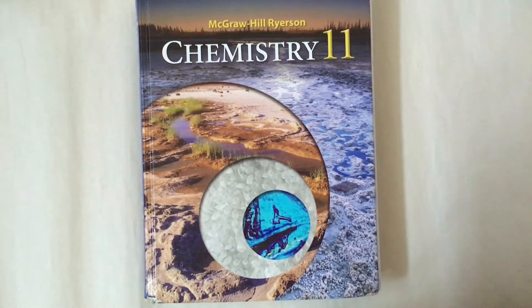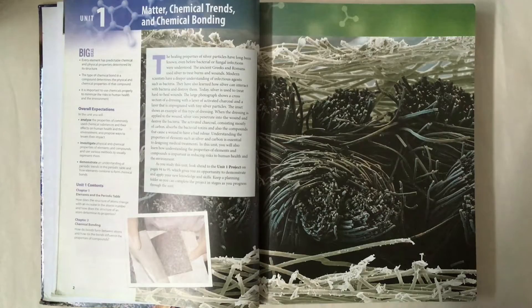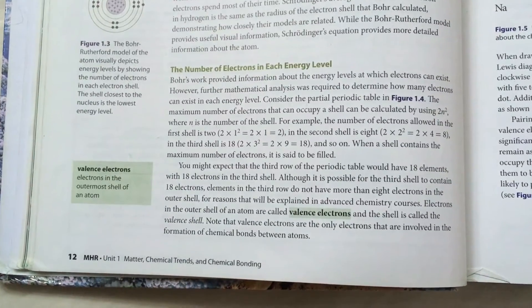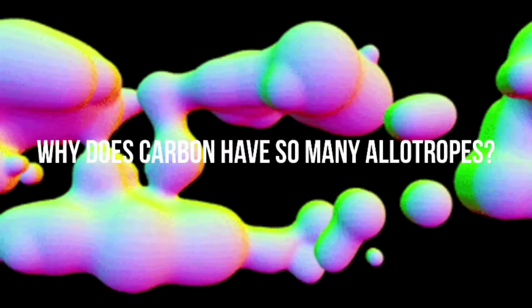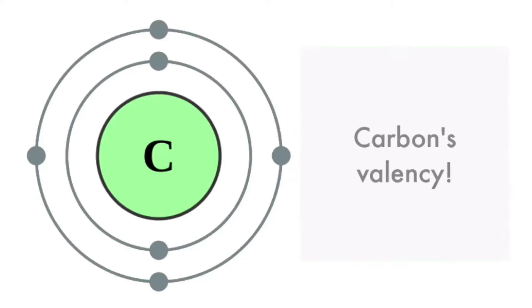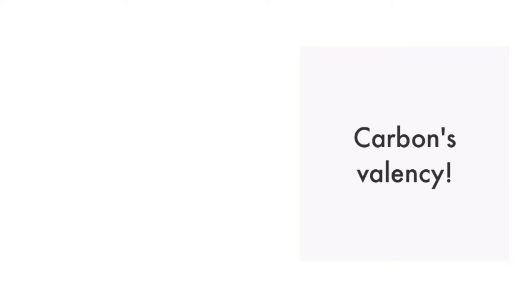There are two classifications for carbon allotropes: the crystalline form and the amorphous form. The crystalline form includes diamond, graphite, and buckyballs, meaning all the atoms are arranged in a definite order. The amorphous form, which is coal, is when all the atoms are not arranged in a perfectly geometric order. This topic connects to unit one from our textbook on matter, chemical trends, and chemical bonding, specifically the section on valence electrons. Based on our knowledge of valence electrons, carbon's valency gives it a great power to combine with others to form new substances.